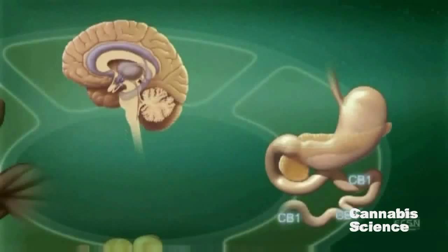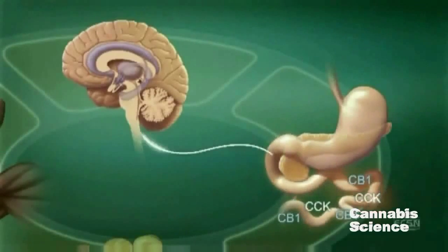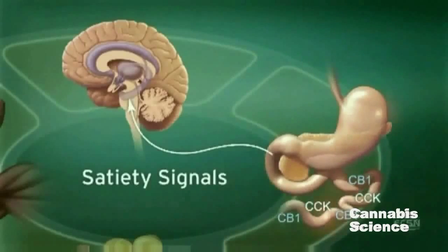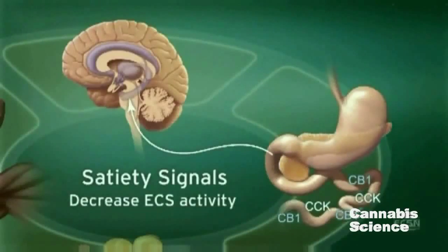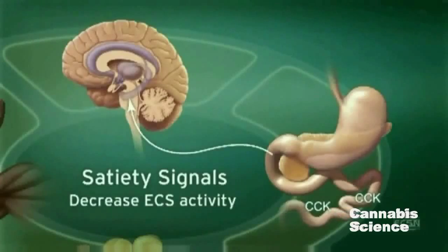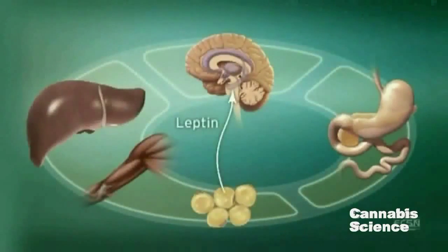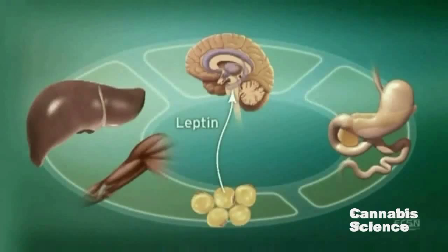After eating, cholecystokinin in the duodenum triggers satiety signals. Subsequently, ECS activity is decreased through suppression of CB1 expression. An increase in the adiposity hormone leptin decreases endocannabinoid levels in the hypothalamus and decreases food intake.